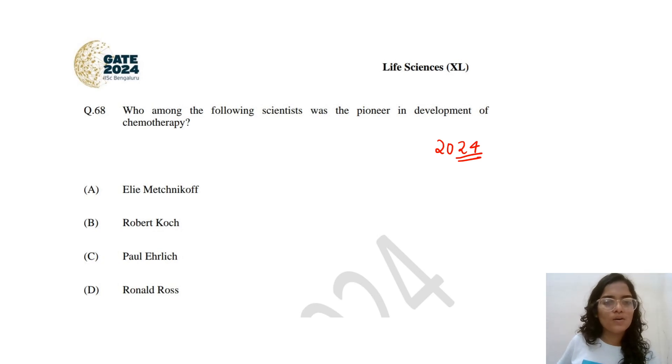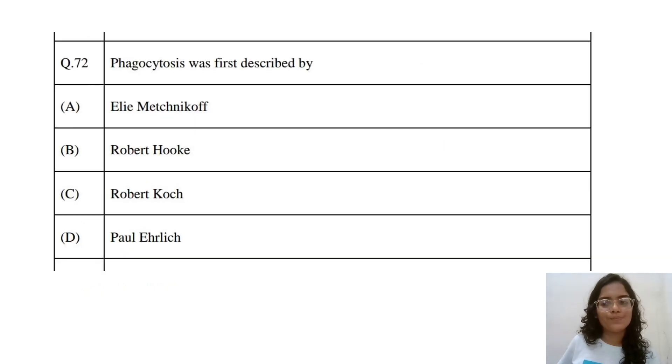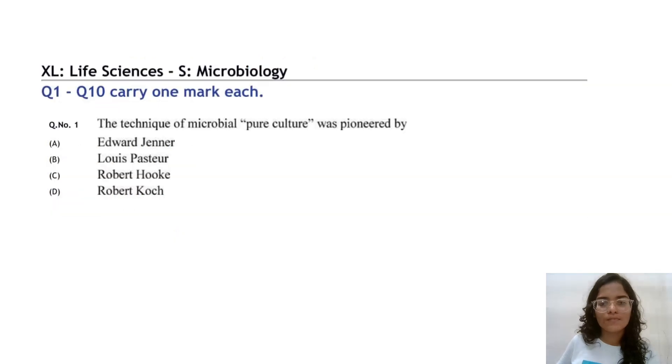Who among the following scientists was the pioneer in development of chemotherapy? Paul Ehrlich. Phagocytosis was first discovered by Elie Metchnikoff.